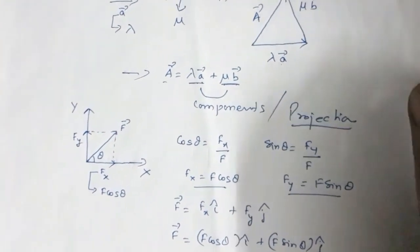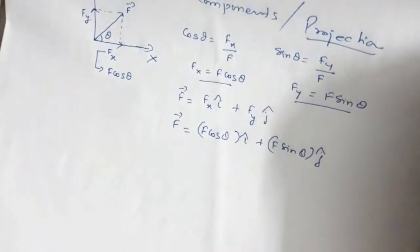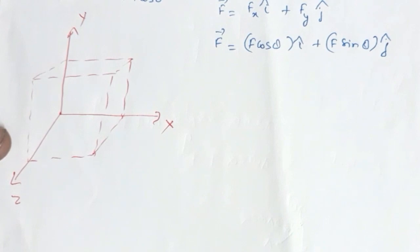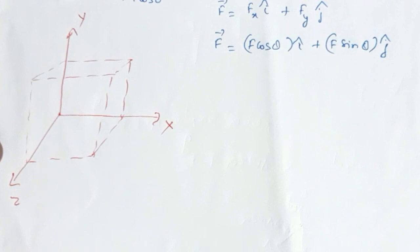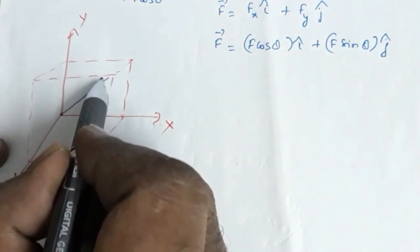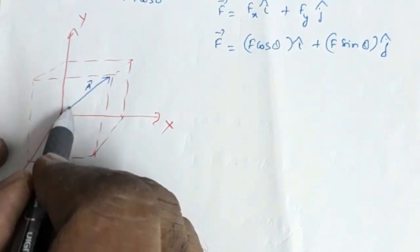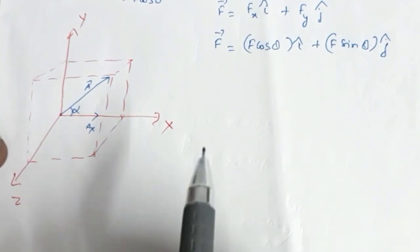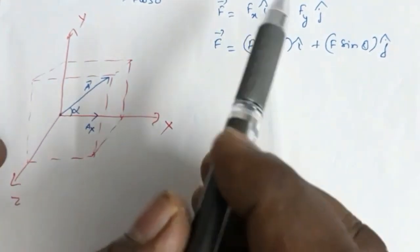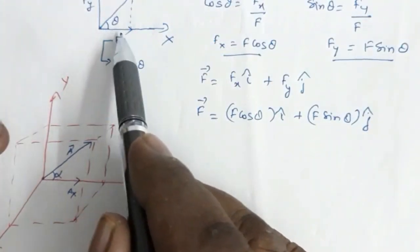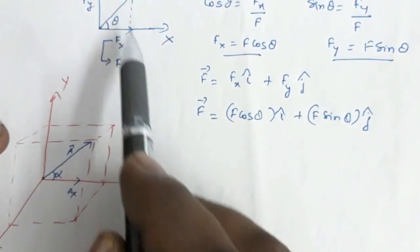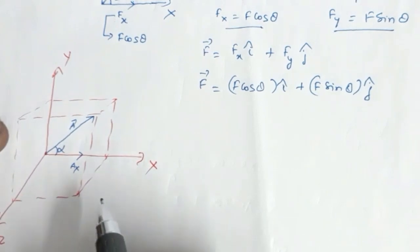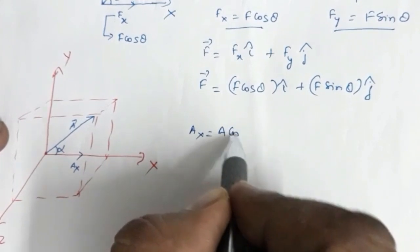Now suppose we wish to resolve vectors in three dimensions. Let us see how to resolve a vector into three mutually perpendicular components. Suppose this is vector a, and this vector makes an angle alpha with the x axis. So ax is the component of a along the x axis. Just as in the 2D case, if vector f makes angle theta with x axis the x component was f cos theta, similarly here ax is equal to a cos alpha.